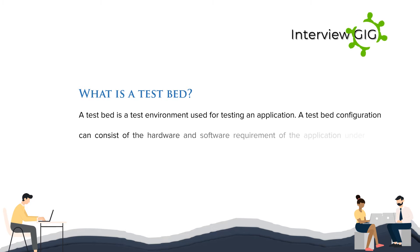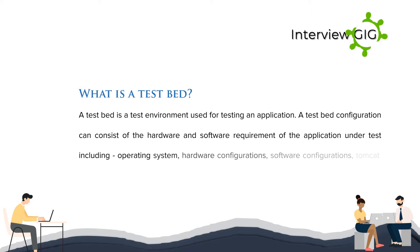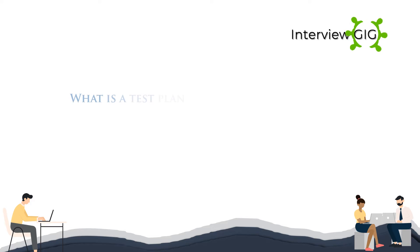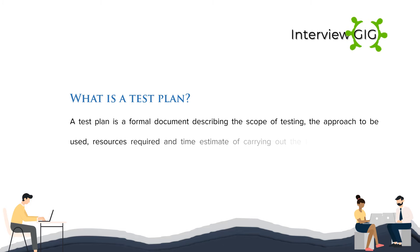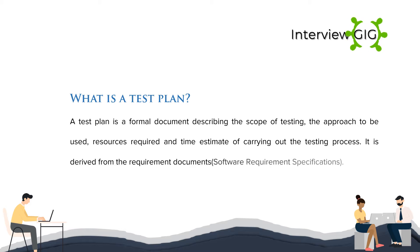A test bed configuration can consist of the hardware and software requirements of the application under test, including operating system, hardware configurations, software configurations, Tomcat, database, etc. What is a test plan? A test plan is a formal document describing the scope of testing, the approach to be used, resources, and time estimate of carrying out the testing process. It is derived from the requirement document and software requirement specifications.